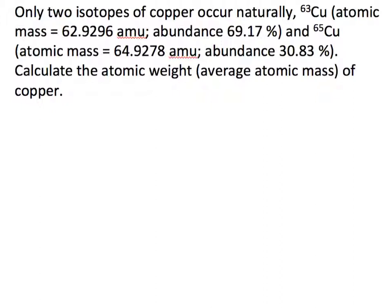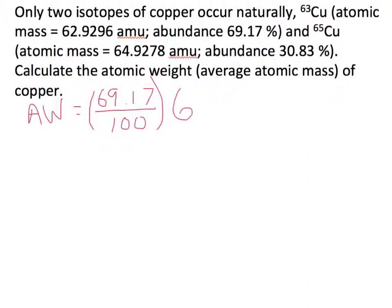We take the percentage of those times the atomic mass and add those together to get the total atomic mass. So the atomic weight is equal to: first, copper-63, which is 69.17% — we divide by 100 to convert from percent — and multiply by the atomic mass of 62.9296 AMU.